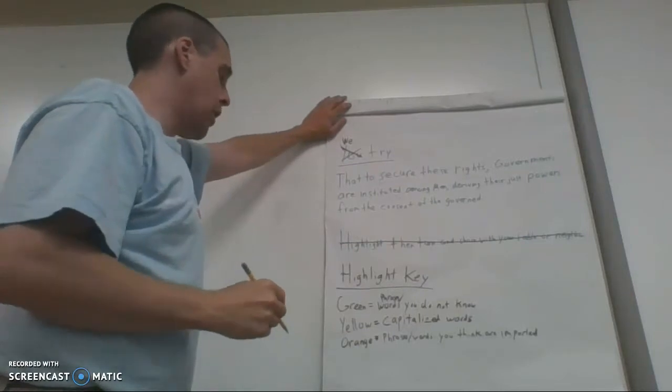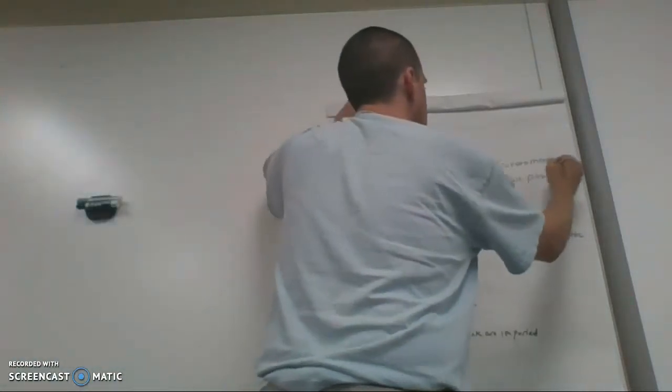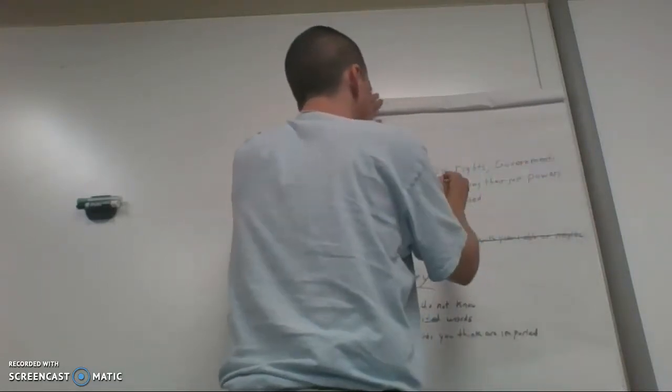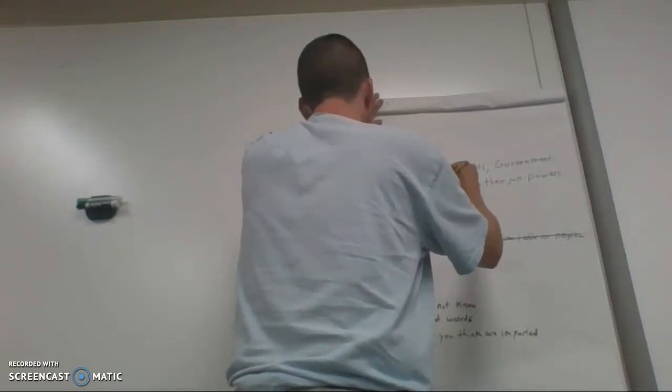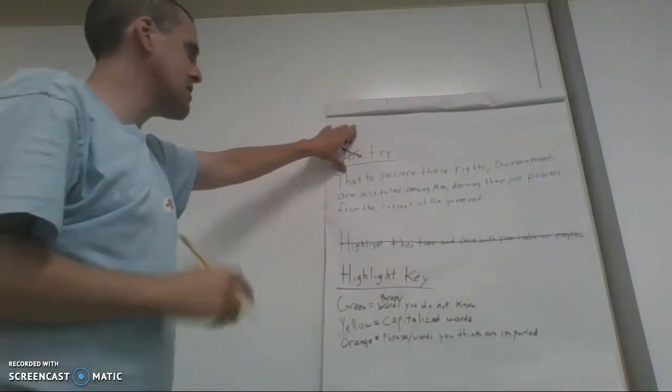Let's take a look at yellow and do our capitalized words. So we have our yellows here for government. Good job. Any others? Men. All right. So that's a yellow. And that's it, right? Because we don't need to capitalize this. That's the beginning of a sentence. Perfect.